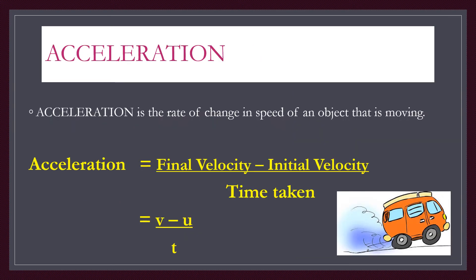Acceleration is the rate of change in speed of a moving object. It is calculated by the change of velocity over time taken, using the equation: acceleration equals final velocity minus initial velocity, divided by time taken. In symbol form: a equals (v minus u) over t.